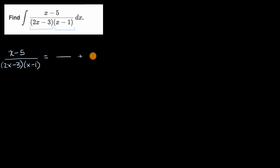What we're going to try to do with partial fraction decomposition is say: can we express (x minus five) over (two x minus three)(x minus one) as the sum of two rational expressions, where the denominator of the first is two x minus three, and the denominator of the second is x minus one?